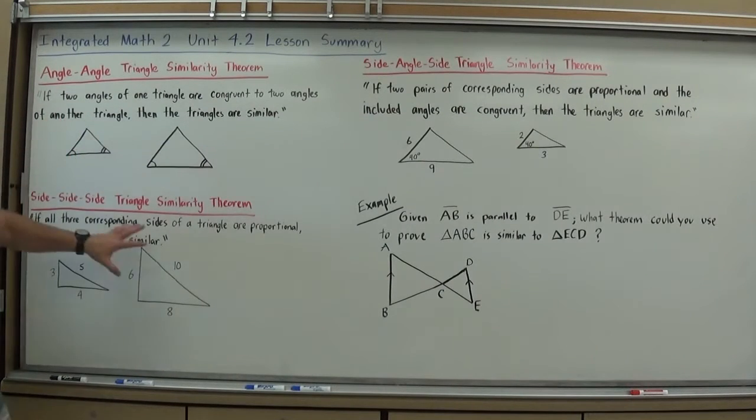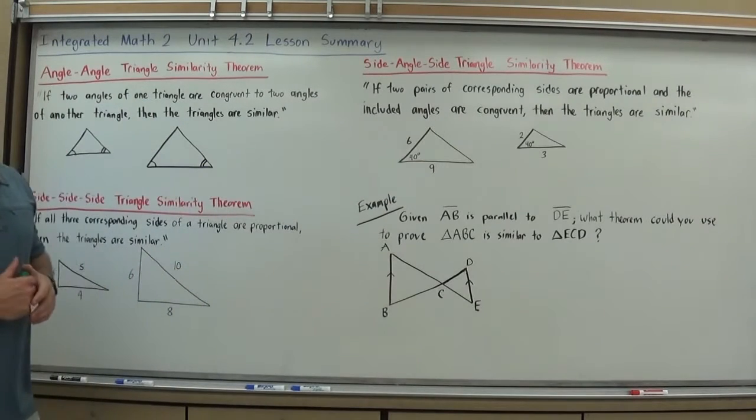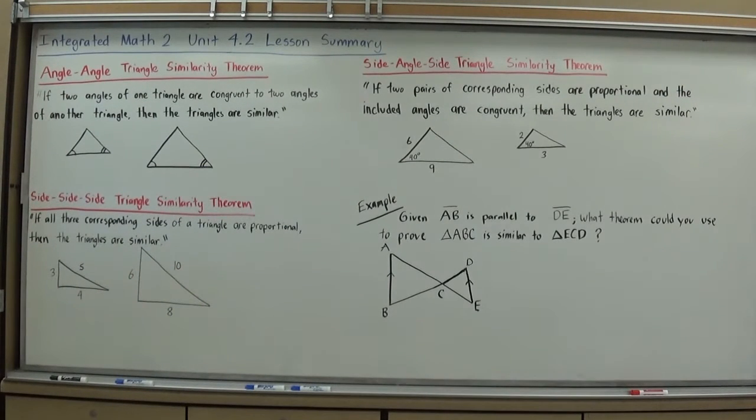So let's start with the three different triangle similarity theorems that we can use that verifies that two triangles are similar without finding all the side lengths and all the angles. That will always work, finding all the angles and all the side lengths and using that to show they're similar. But we can shortcut that because of some of these theorems.